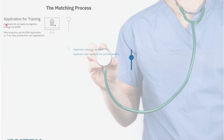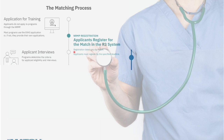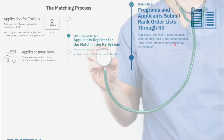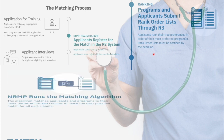Now I'll show you the actual matching process steps so you can stay organized. First, go to the NRMP website and register. Then go to ERAS and apply for programs. Some programs will choose to interview you and some may not. After interviews, they will rank you according to their rank order list — whether they prefer you or not — and you will also rank the programs you were interviewed at according to your preference. You cannot rank a program that didn't interview you.